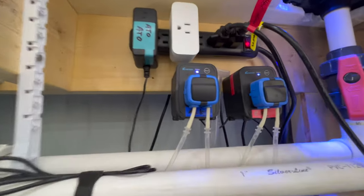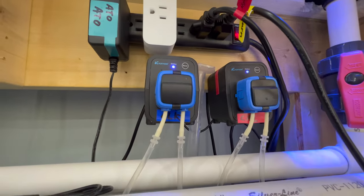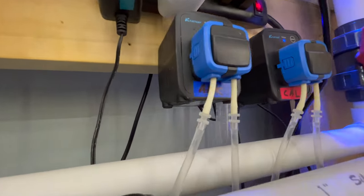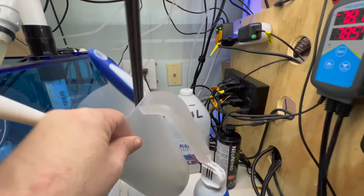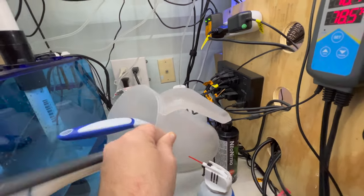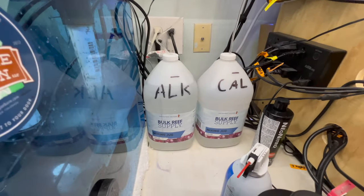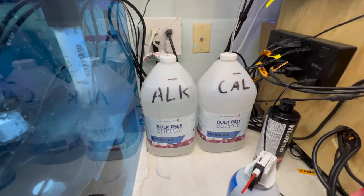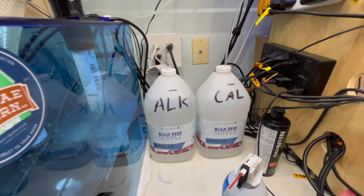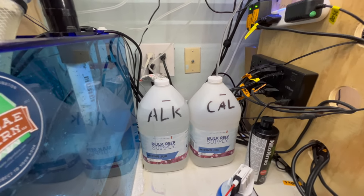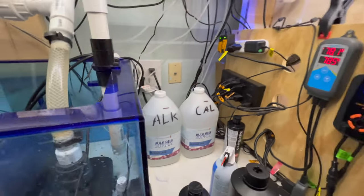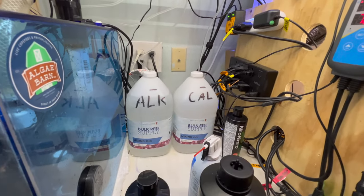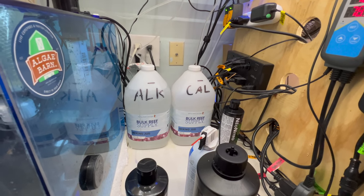Moving over to our dosers, I have the Kamoer X1 Pros Wi-Fi dosers. I have one for alkalinity and one for calcium. And then I have some fancy dosing containers, top of the line here at Oceanol Reefing, a couple gallon containers. Currently I'm not dosing too much because the corals are just starting to grow in. I think I'm at 15 milliliters of alk and calcium is maybe about five. My last test was 8.7 alkalinity and 450 on the calcium.